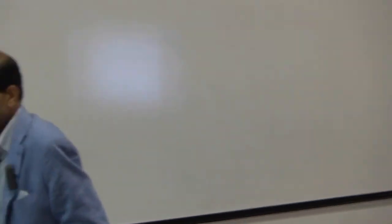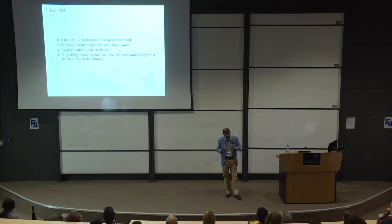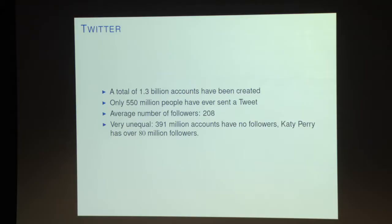Moving forward to 2016 and 2017, I want to give you a sense that this idea — that a very small fraction of people have access to lots of information and are indeed being followed by the rest of the population — is also reflected in a high-level summary of Twitter. There are over a billion people who have accounts, but almost half of them have never sent a tweet, so more than half have been quite passive. The average number of followers is 208, which is quite large.